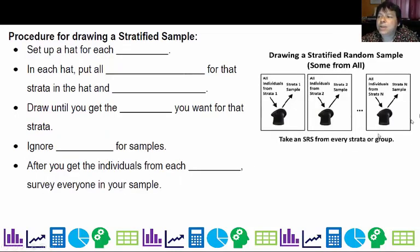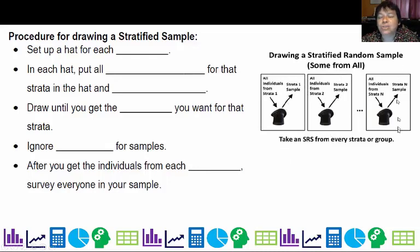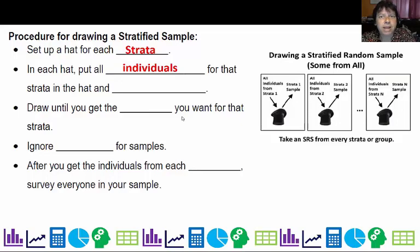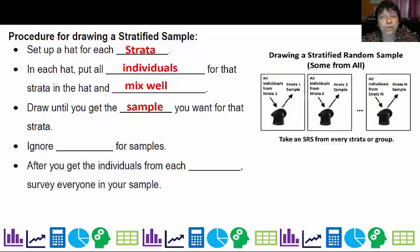To set up a stratified sample, you do a simple random sample within each strata — each strata gets its own hat. Set up a hat for each strata and put not the strata names but the individuals into each hat. So the freshmen go in the freshman hat, sophomores go in the sophomore hat. Mix each hat well, draw until you get the sample size you want for that strata — ignoring repeats as always — then survey everyone you pulled from the different hats.